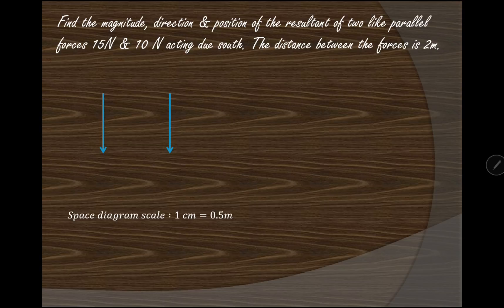As you can see, we have shown these two forces of 15 Newton and 10 Newton acting due south in the downward direction. The distance between the forces is 2 meters. We have chosen the space diagram scale as 1 centimeter equals 0.5 meter, so 2 divided by 0.5 gives 4, and the distance between the two forces on the diagram is 4 centimeters by our space diagram scale.